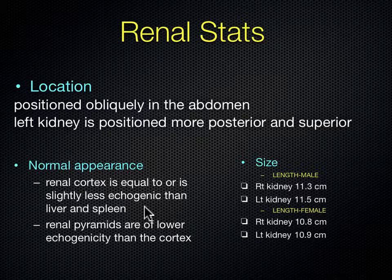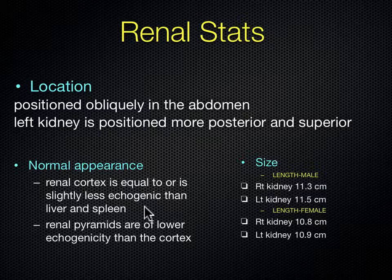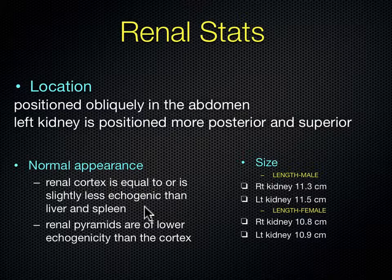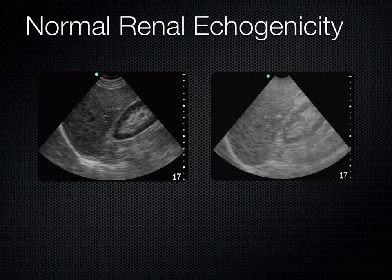It's because the aorta travels out of the heart and down the spine—down the left side of the spine. The left kidney, being closer to the aorta, gets more of a direct blood supply, so it gets a little bigger over time. That's why the left kidney is bigger than the right kidney—it's closer to the aorta.